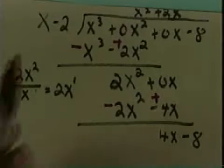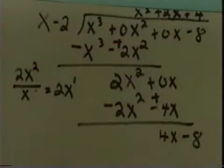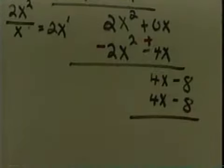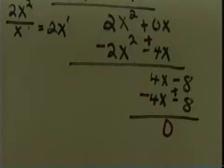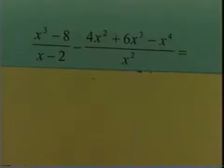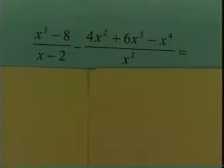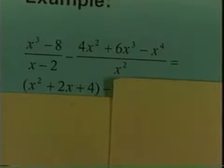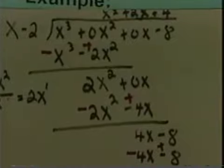Bring down the negative 8. x goes into 4x, 4 times. 4 times negative 2 is negative 8; 4 times x is 4x. Now I'm ready to subtract, which means I add the opposite and I get 0 remainder. So we divide x cubed minus 8 by x minus 2 and get x squared plus 2x plus 4. Since we're dividing a polynomial by a polynomial, the correct procedure is long division.